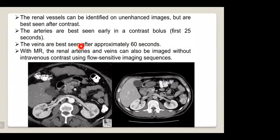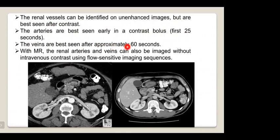The renal vessels can be identified on enhanced images but are best seen after contrast. The arteries are best seen early in the contrast bolus, at about 20 to 40 seconds, and the veins at approximately 60 seconds. On MRI, the renal arteries and veins can also be imaged without intravenous contrast using flow-sensitive imaging sequences.